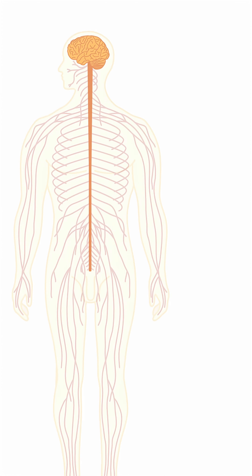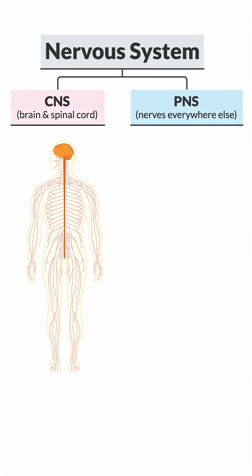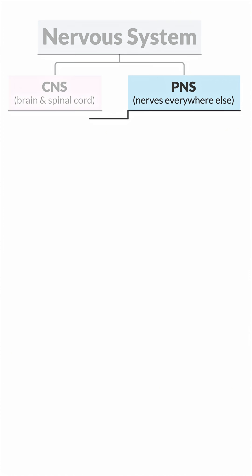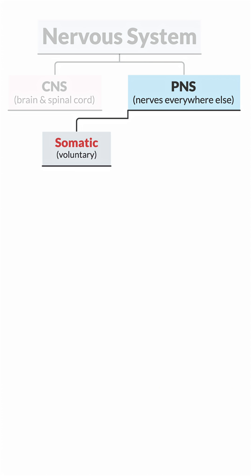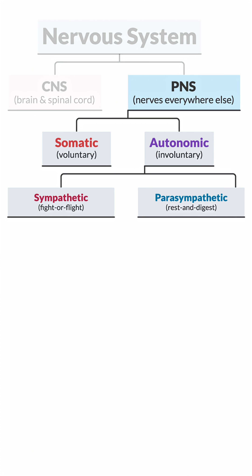Now let's zoom out for the full chain. The CNS is the brain and spinal cord. The PNS is for all the nerves everywhere else. And the PNS splits into the somatic, or voluntary, and autonomic, involuntary. And very lastly, the autonomic splits into the sympathetic — that's stress, fight-or-flight — and the parasympathetic, the rest and digest.